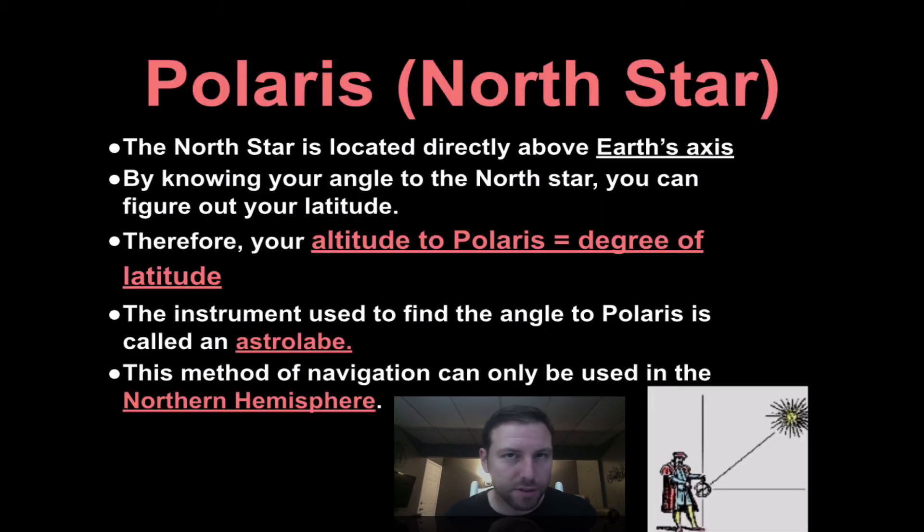Okay so Polaris speaking of is located once again directly above Earth's axis. And it helps us by knowing the altitude of Polaris allows us to find our degree of latitude. So basically it was used for navigation. And once again we only see this within the northern hemisphere.